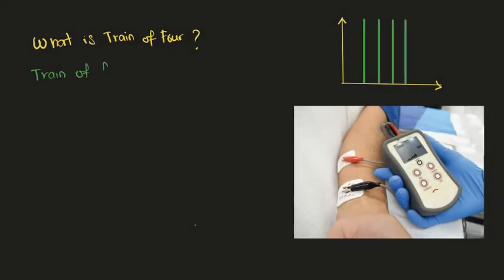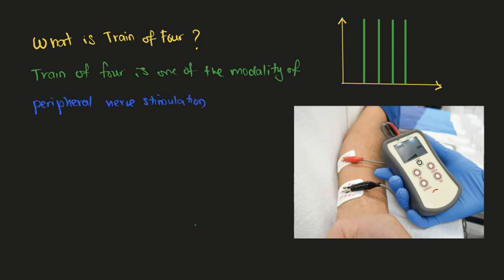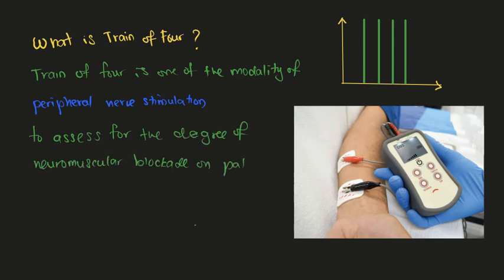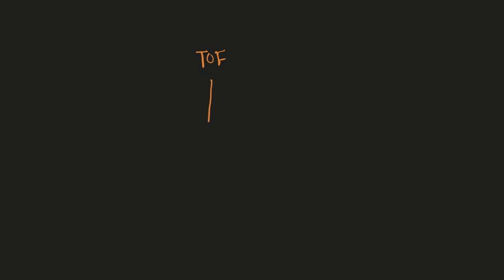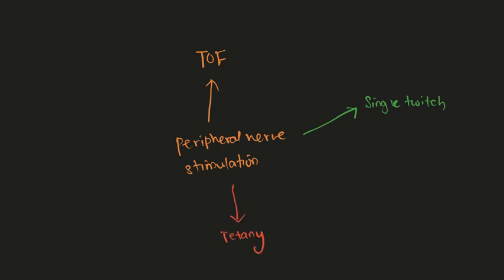What is Train of Four? Train of Four is one of the modalities in peripheral nerve stimulation to assess for the degree of neuromuscular blockade on patients who receive neuromuscular blocking drugs. Train of Four is just one of the monitoring in peripheral nerve stimulation. There are also single twitch, tetany, and double burst stimulation.